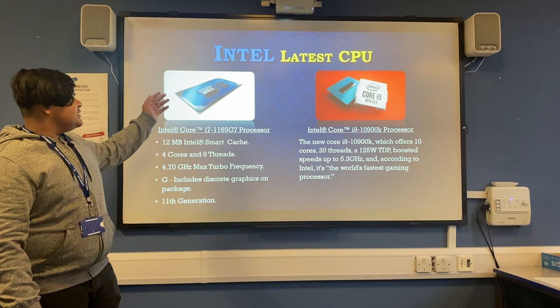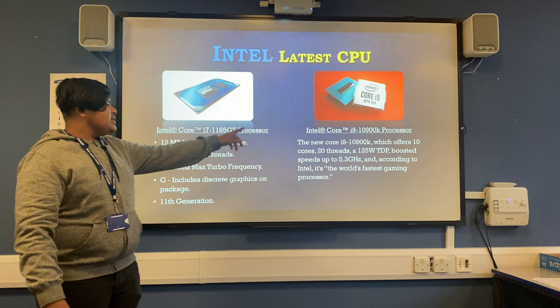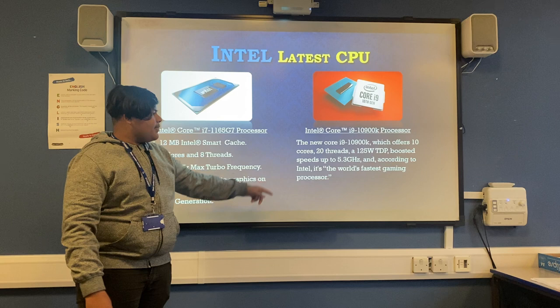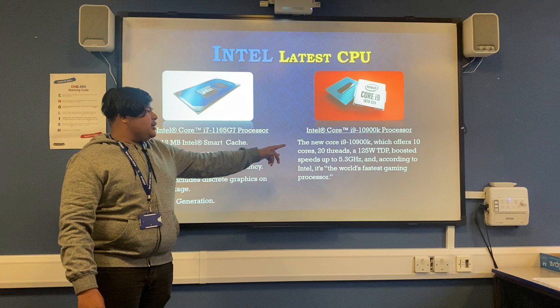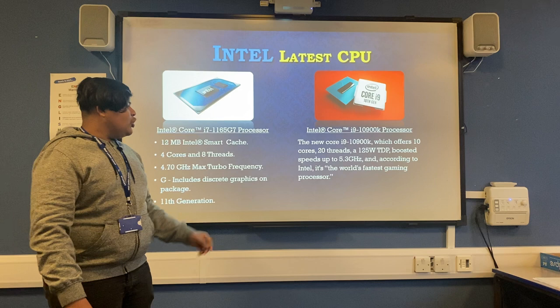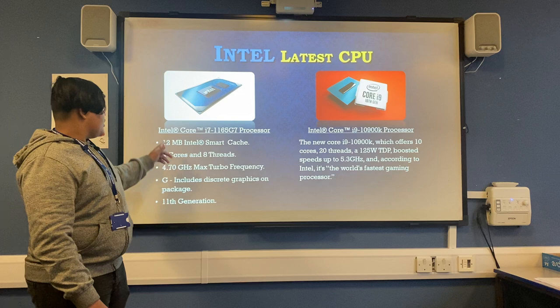So here are the Intel latest CPUs. The first is the Intel Core i9-10900K processor. It gives you 10 cores, 20 threads, 125 watts TDP, and boost speeds up to 5.3 GHz. According to Intel, it is the world's fastest computer processor.